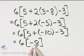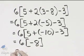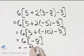And now this is what? This is multiplication, so we have 6 times negative 8. And what is 6 times negative 8? It is negative 48.